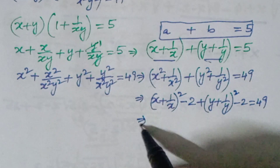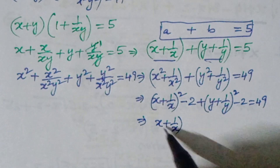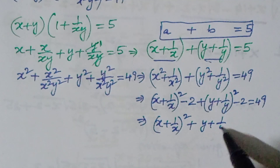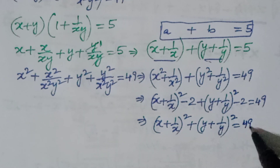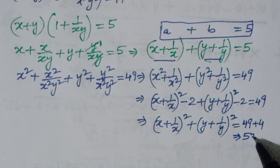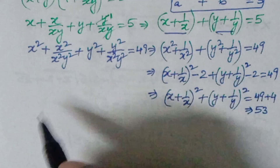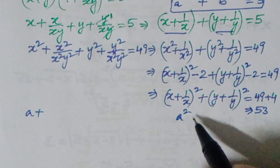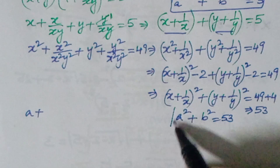Substituting into the second equation: (a² - 2) + (b² - 2) = 49, so a² + b² - 4 = 49, giving a² + b² = 49 + 4 = 53. So a² + b² = 53.